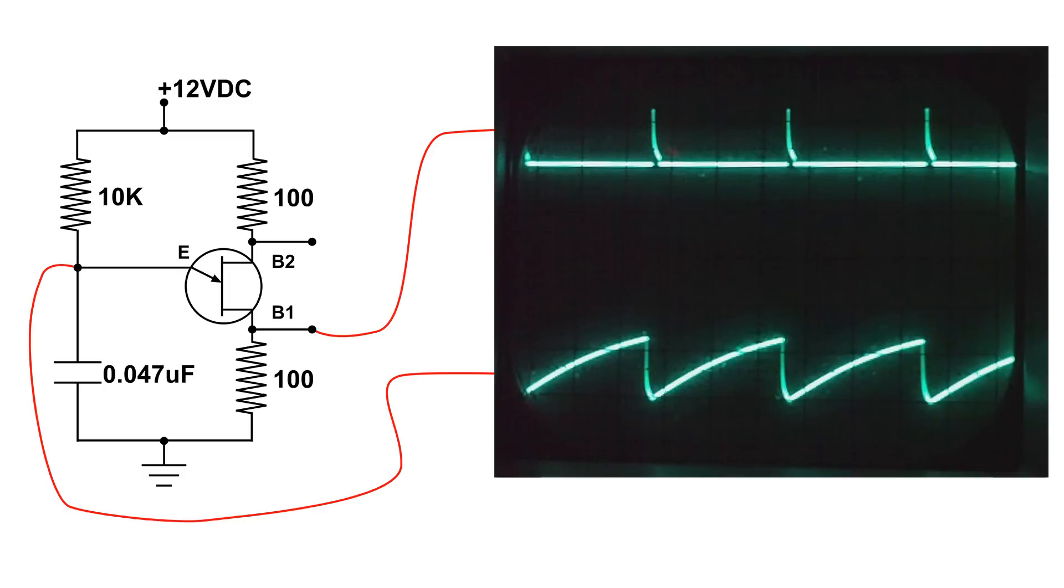And then the whole thing starts over again, because the unijunction transistor will then shut off. It will no longer be firing. And then the capacitor will charge up again. And when it gets to the firing point, E will fire, and the capacitor will discharge again. And over and over and over.